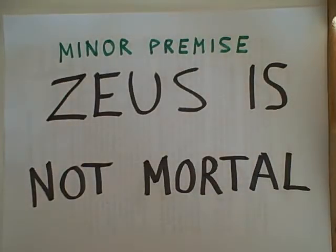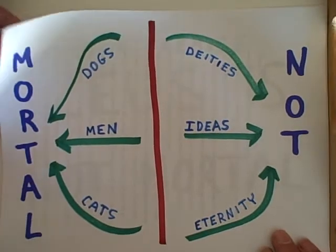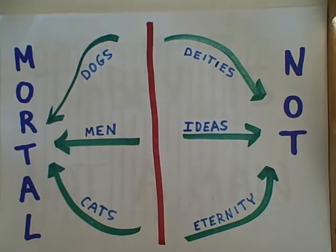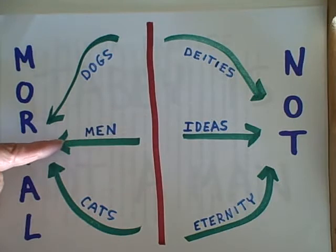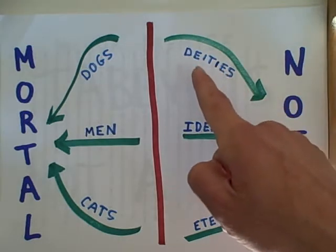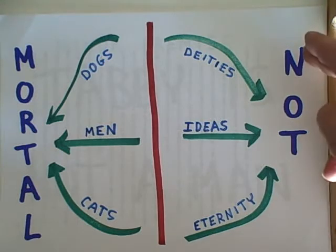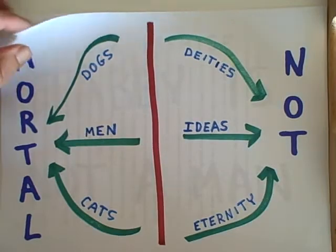Let's take a look at another minor premise which will yield a valid conclusion: Zeus is not mortal. Zeus is going to end up on this side of the equation — Zeus is not mortal. Therefore we know he's not on the pathway of men, because all men end up being mortal. Zeus happens to be one of the Greek deities, but even if we didn't know that, the fact that he's not mortal means he's not on the pathway of being a man.